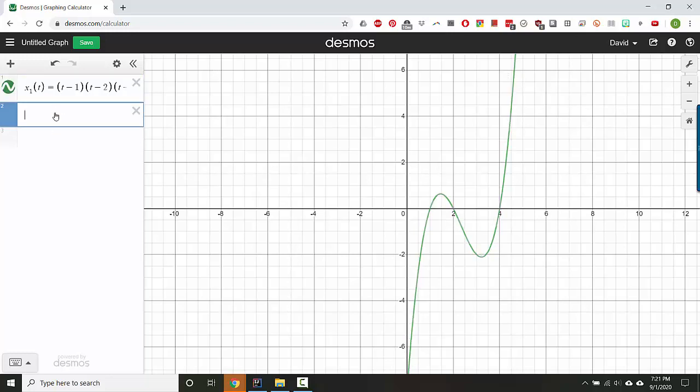Now let's make the y equation. We'll do y and then hit one as the subscript. We'll make it a function of time. Let's make this maybe t times t plus one times t minus three, something like this. Let's add three on the outside. Great.